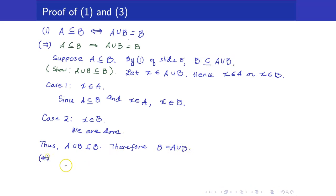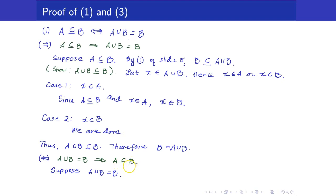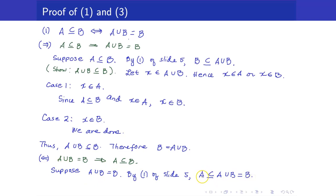For the other direction, we want to show that A union B equals B implies A is a subset of B. Suppose A union B equals B. Rather than the standard method, we use a previous result: by part 1 of slide 5, A is a subset of A union B. And since A union B equals B, we have that A is a subset of B. That concludes our proof — we were able to show both directions.